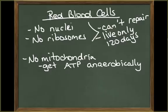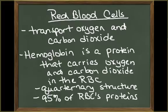They have no mitochondria, so they have to obtain their energy through anaerobic metabolism. The primary purpose of the red blood cell is to transport respiratory gases such as oxygen and carbon dioxide throughout the body. Hemoglobin is a globular protein with a quaternary structure within the red blood cell, responsible for the cell's ability to transport oxygen and carbon dioxide, and accounts for 95% of its intracellular proteins.